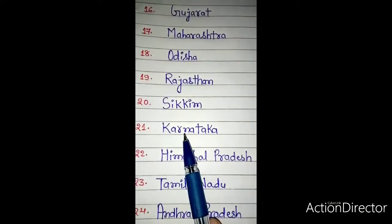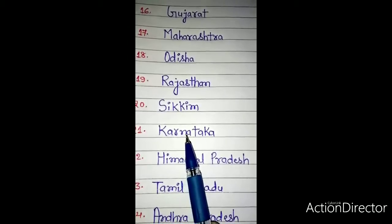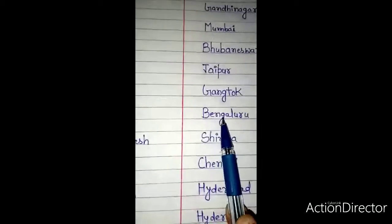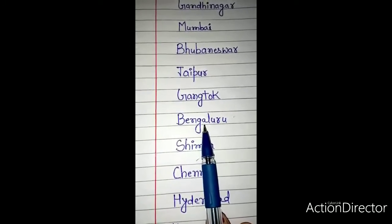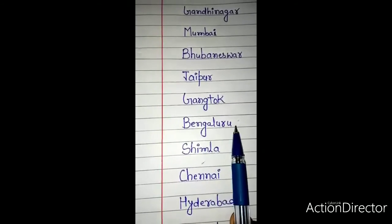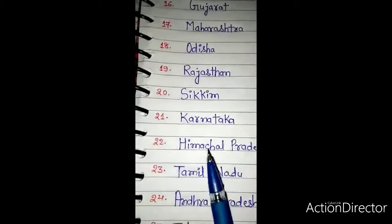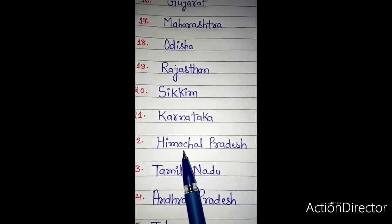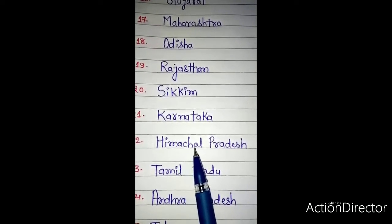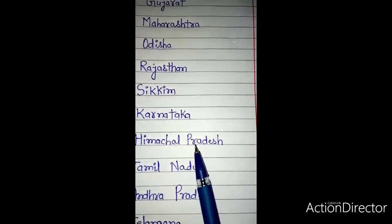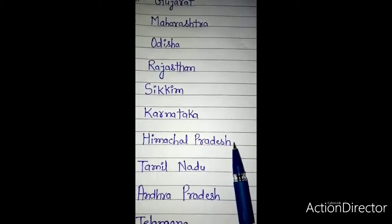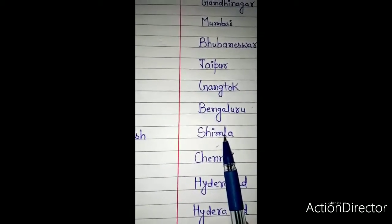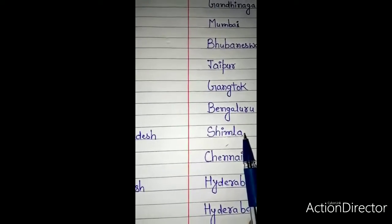Number 21: Karnataka — K-A-R-N-A-T-A-K-A. The capital of Karnataka is Bengaluru — B-E-N-G-A-L-U-R-U. Number 22: Himachal Pradesh — H-I-M-A-C-H-A-L P-R-A-D-E-S-H. The capital of Himachal Pradesh is Shimla — S-H-I-M-L-A.